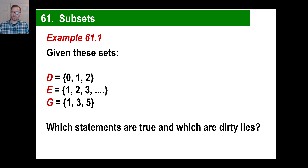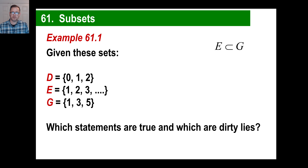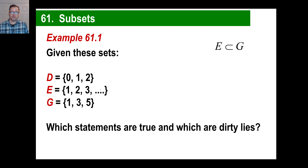Tell me which statements are true and which ones are false. First off, is E a subset of G? In other words, is E a smaller set included in G? That's going to be false, because E is not a small part of G. E is way bigger than G, and in fact E has a 2 in it which is not part of set G.